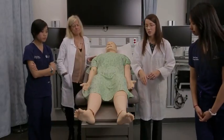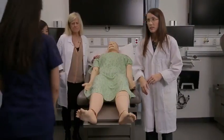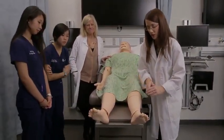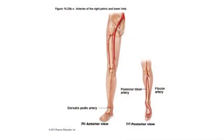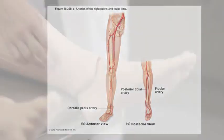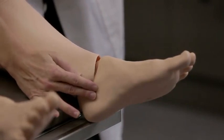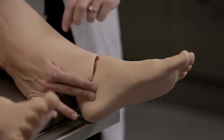The next place is at the foot. There are two locations here that are commonly checked. The first is the dorsalis pedis, which is here at the top middle portion of the foot. And the other is the posterior tibial, which is located just below and behind the knob on the ankle.